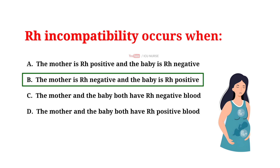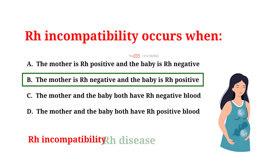Rh incompatibility is also known as Rh disease. It occurs when a woman who is Rh negative becomes pregnant with a fetus who is Rh positive.